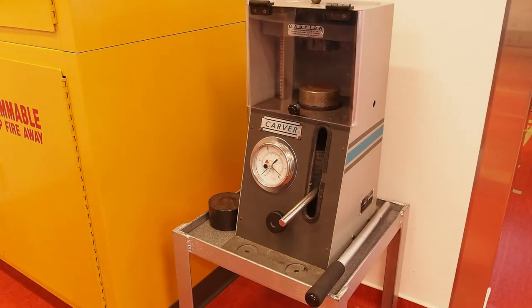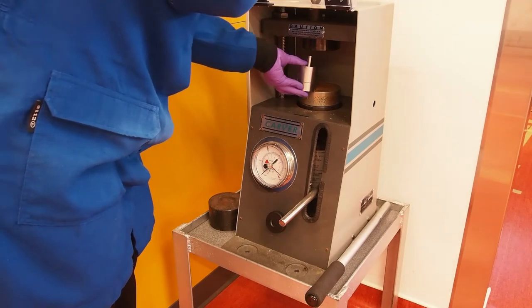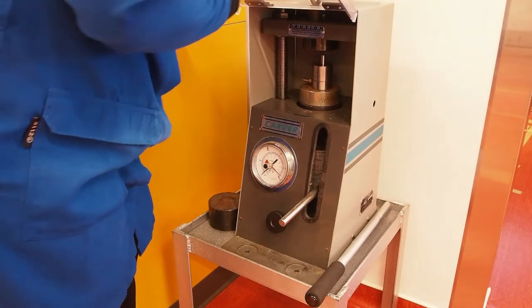Carefully transport the die assembly to the pellet press. Place the die into the press and ensure that the safety shield is locked.